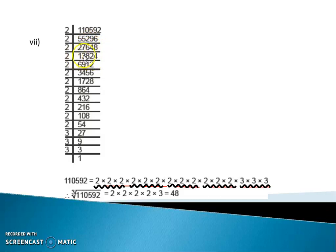And this number divide by 2, we get 13,824. Again divide by 2, we get 6,912. Again divide by 2, we get 3,456. Divide by 2, we get 1,728. Again 864 divide by 2, we get 432. Divide by 2, we get 216. Divide by 2, we get 108.